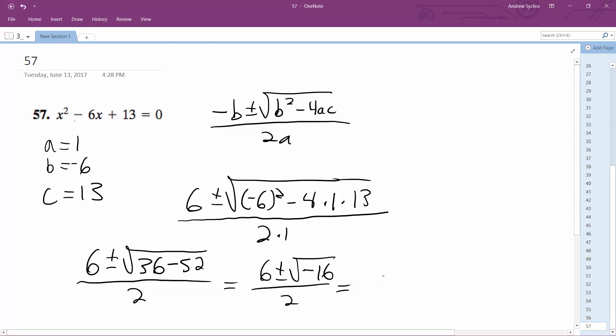This becomes - so actually I'm going to write 6 plus or minus 4i over 2, and finally you can simplify this down to 3, so it becomes 3 plus or minus 2i. So that's it.